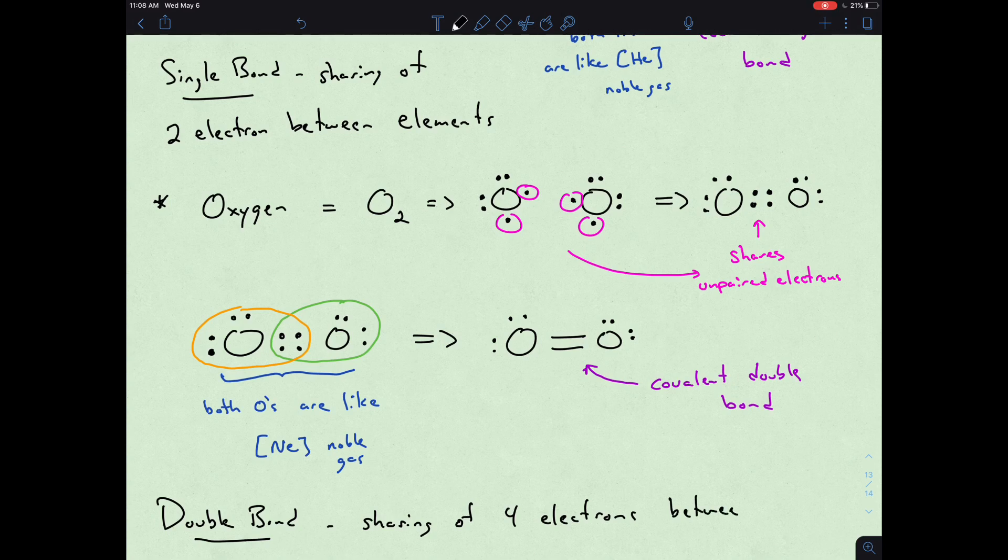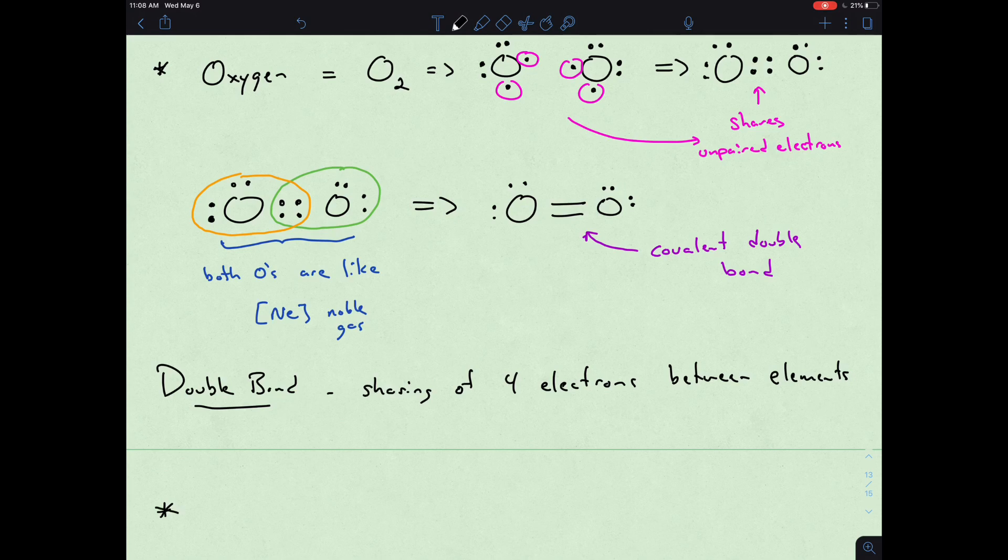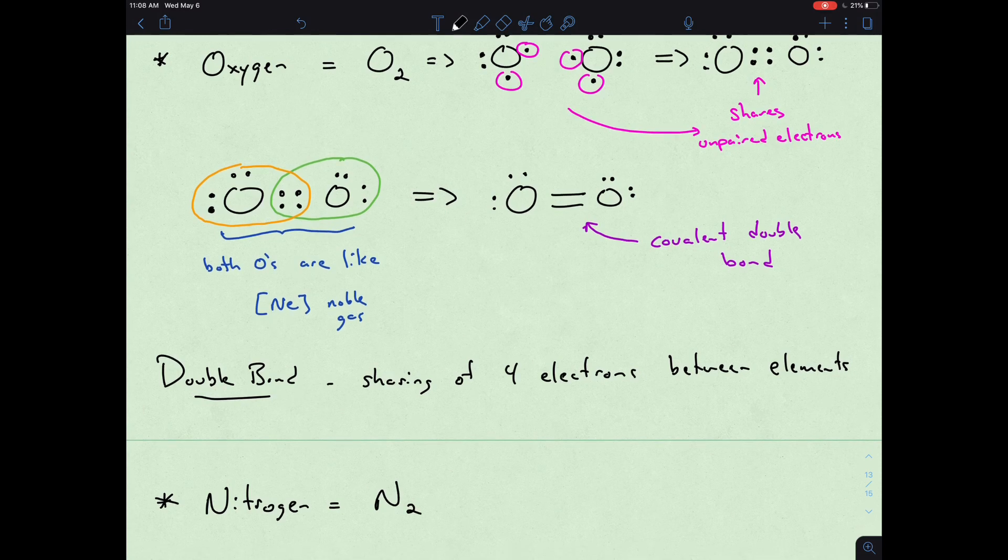This is just a sharing now of four electrons between elements. The last scenario in terms of this introduction we can look at nitrogen. Nitrogen also being a diatomic, nitrogen has five valence electrons. If it shares all three of each nitrogen's unpaired electrons we would end up with something like this.